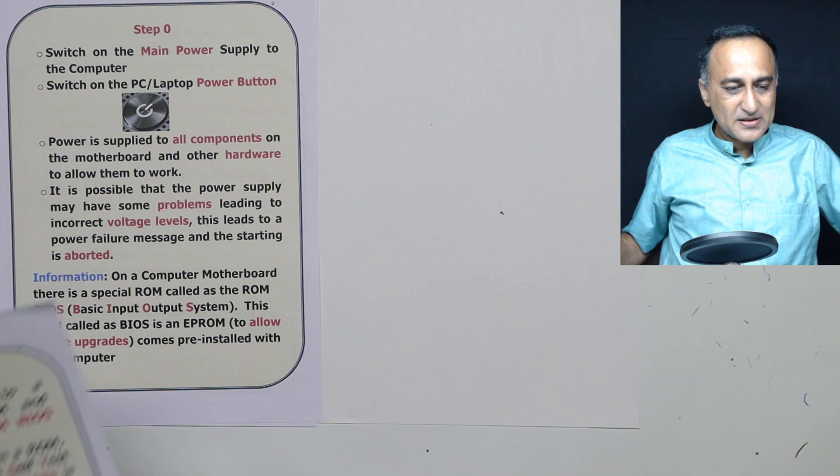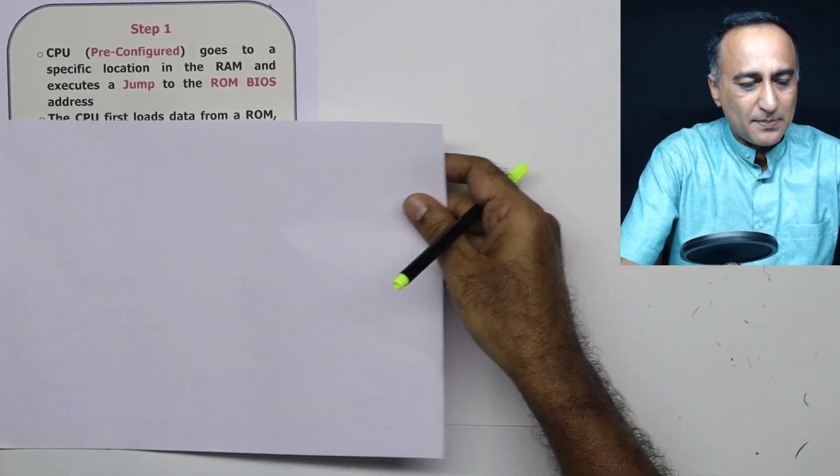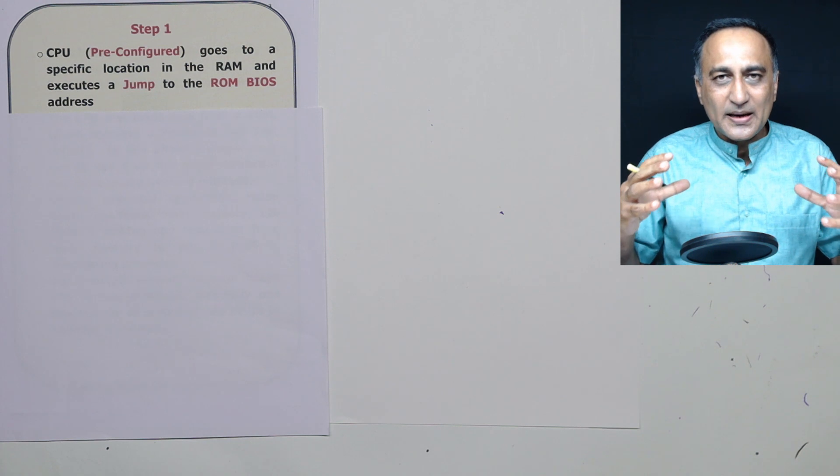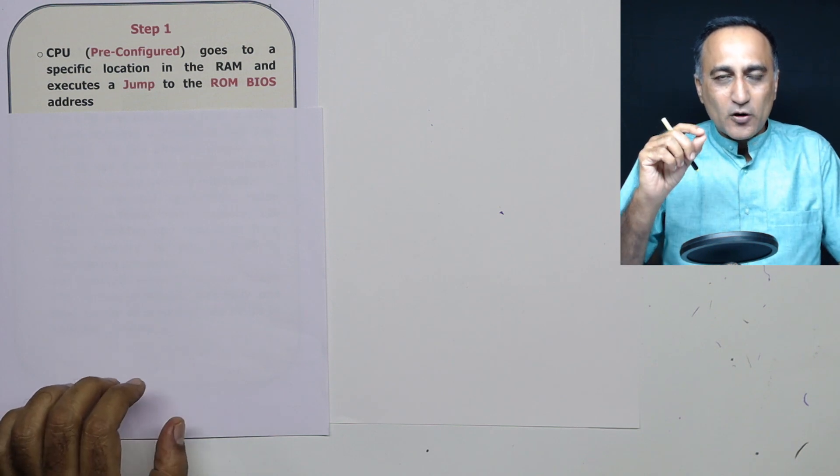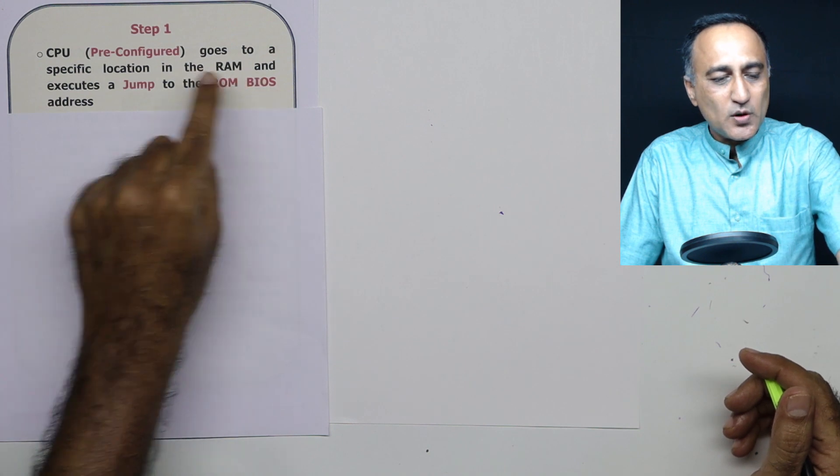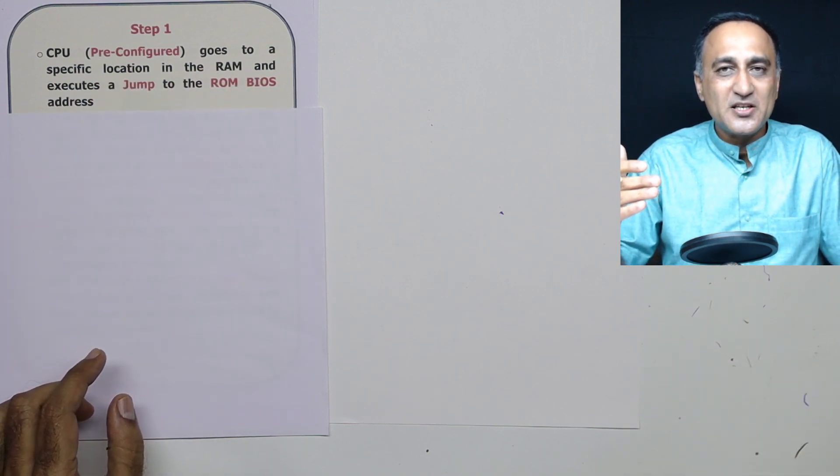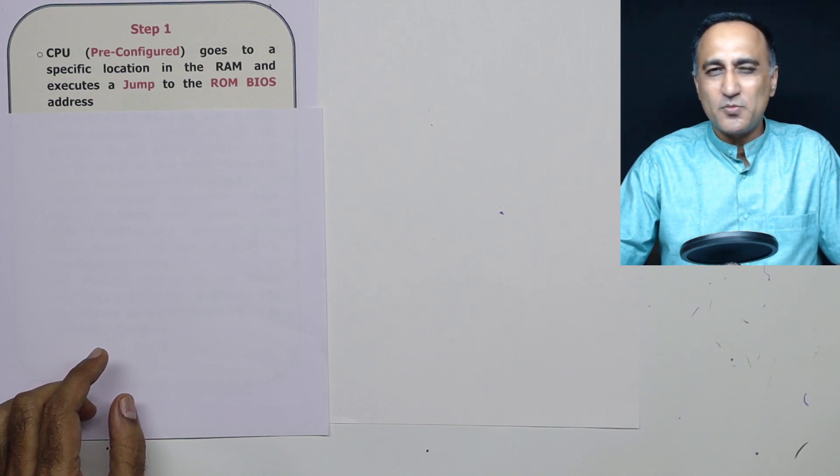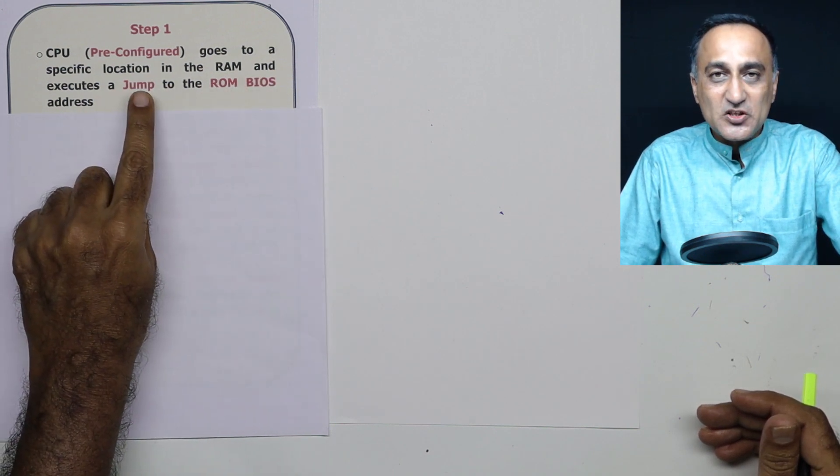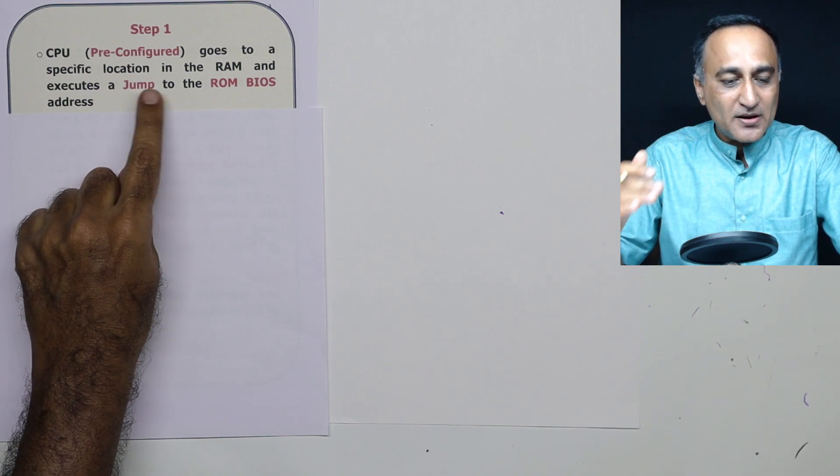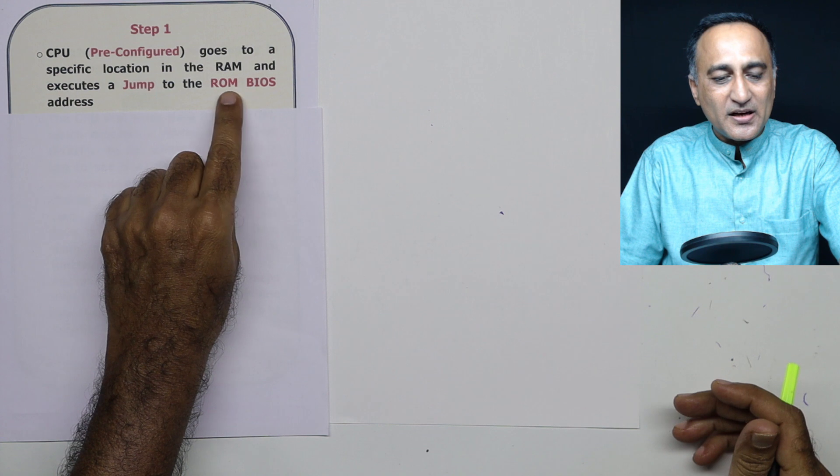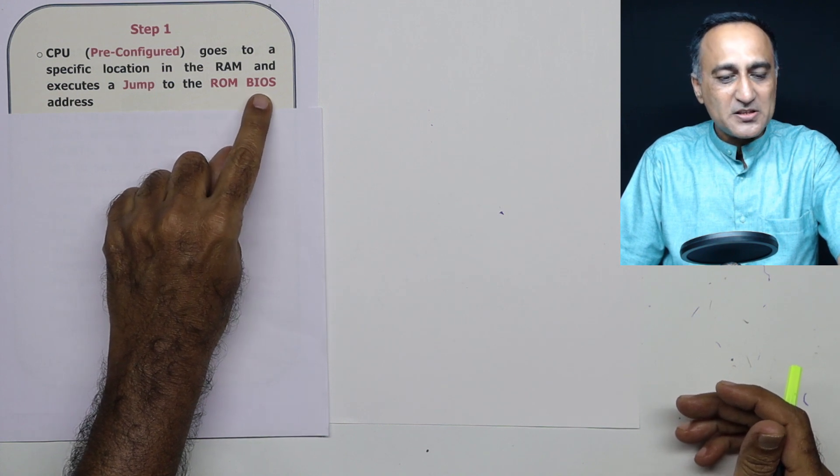Now let's take a look at what happens in step one. In step one what happens is the CPU, at the time of assembling or developing the laptop or the PC, is configured in such a way that the first thing the CPU does is it goes to a specific location in the main memory. For example, it could say jump to address FFF0 which could be some address in the memory. At that address the CPU then executes a jump instruction, that means a transfer of control from here to the BIOS address. Once it goes to the ROM BIOS, the CPU first reads data from the ROM.